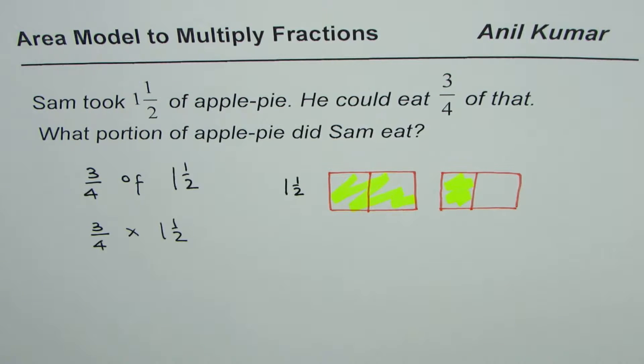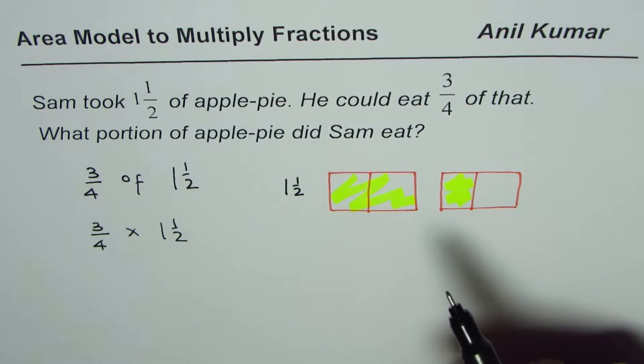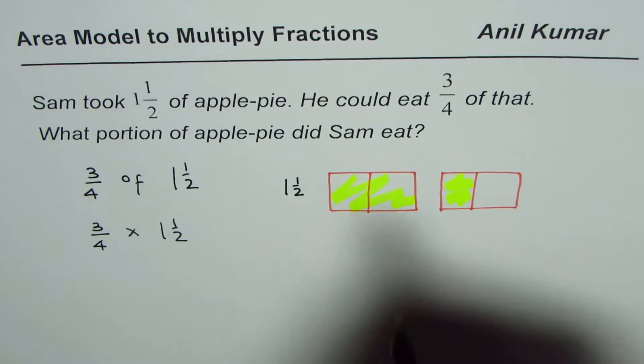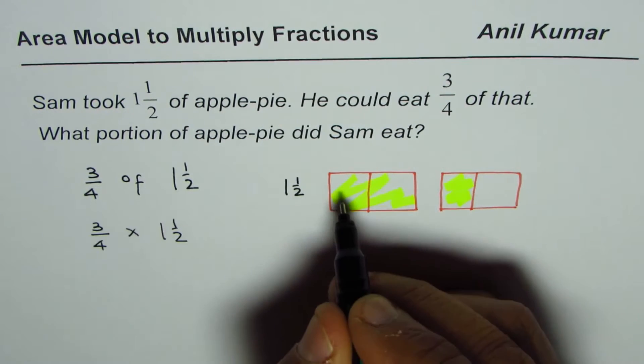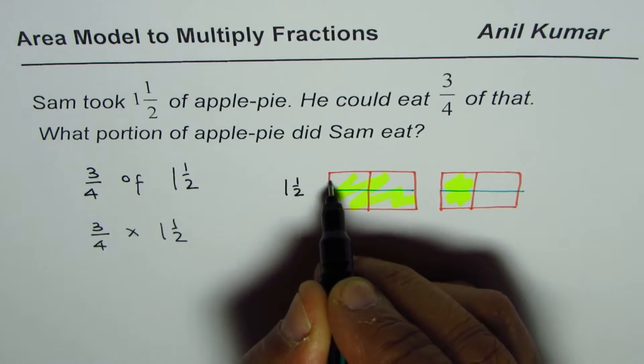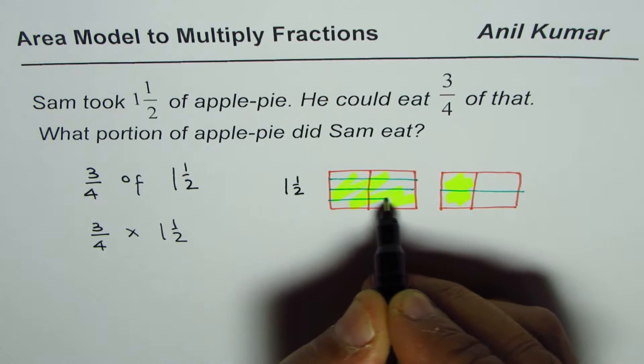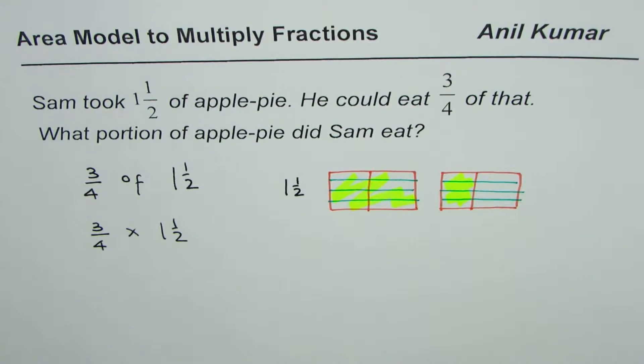Now we have to do three-fourths of all this. How can we do it? One way is to divide them into four equal parts and select three of them. So I'll divide this horizontally. Let me divide into four equal parts—that means first into half and then again halves, so that becomes four equal parts.